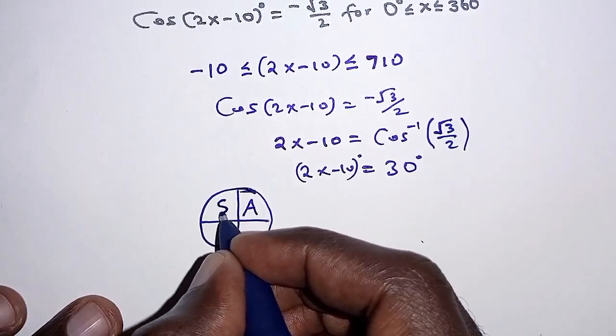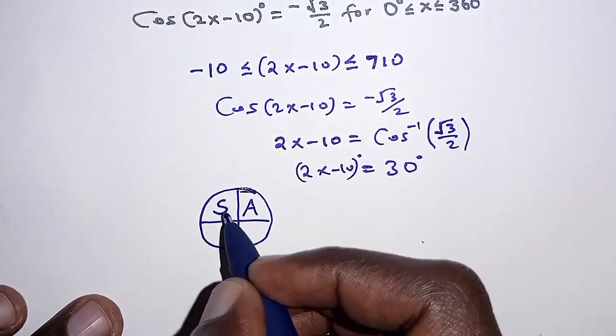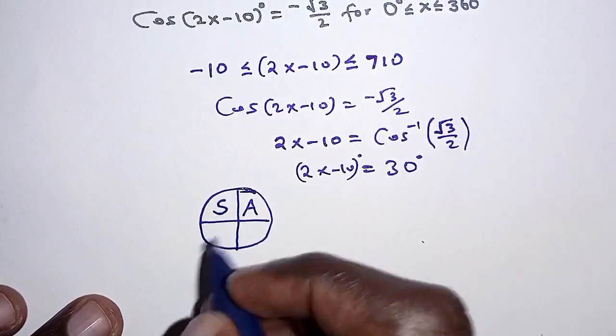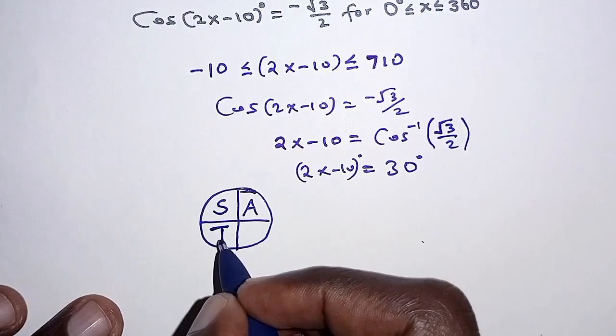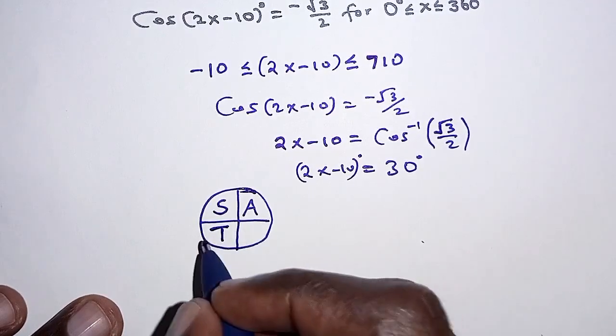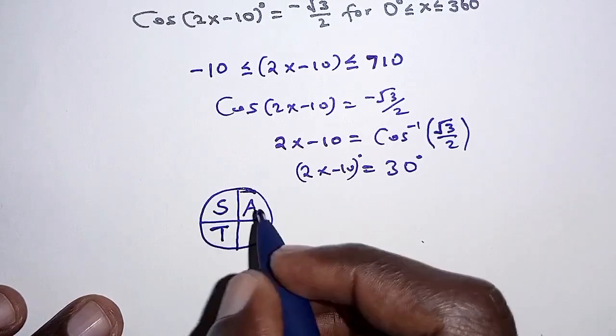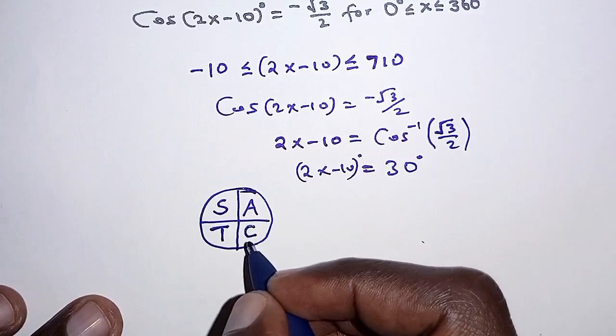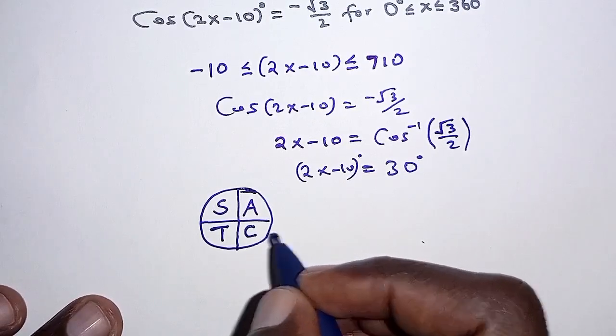all trigonometric ratios in this quadrant are positive. And then here we have S for sine, only sine is positive, while tangent and cosine are negative. And then here T, only tangent is positive, while cosine and sine are negative. And then here, only cosine is positive, while sine and tangent are negative.